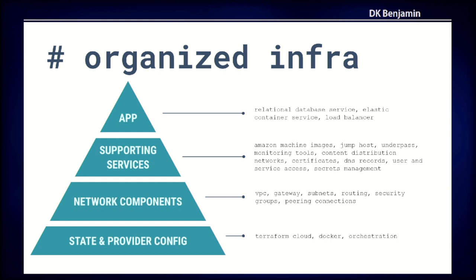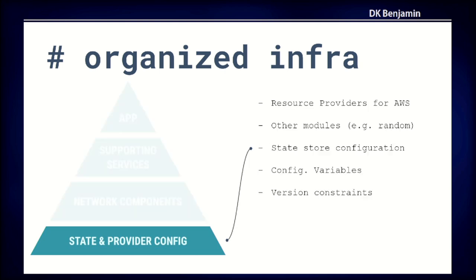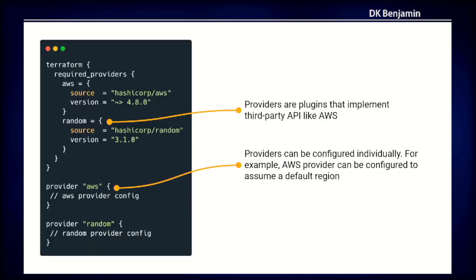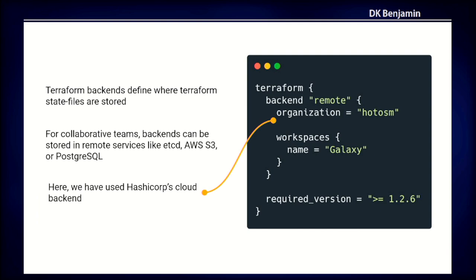In order to even get the app online, we really have to start from a very base level and build that pyramid. We start at the bottom with our state and provider config. We're talking about resource providers — how we're defining the components on AWS. We also use other modules like random. We have the state store configuration to connect to the remote backend, configuration variables, and version constraints. We use Terraform.io, which is HashiCorp's cloud backend, and it's all defined in code in Terraform, treated similarly like plugins.